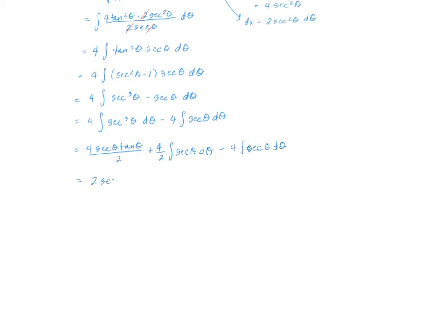So two secant theta tangent theta. When I combine these like terms — same integral — it would be plus two minus four, giving a minus two times the integral of secant of theta d theta. From a previous section, the integral of secant is the natural log of the absolute value of secant plus tangent. So this is two times secant of theta tangent of theta minus two times the natural log of the absolute value of secant theta plus tangent theta, plus our constant C.